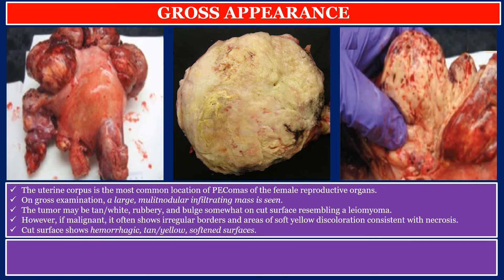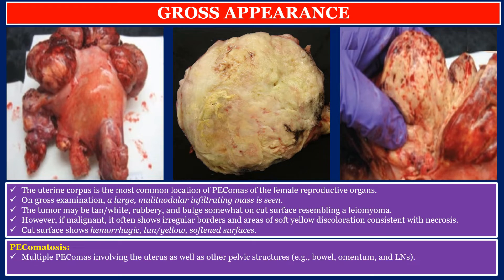Cut surface shows hemorrhagic, tan-yellow, and softened surfaces. What is PEComatosis? There are multiple PEComas involving the uterus as well as other pelvic structures such as bowel, omentum, and lymph nodes. These are more common in patients affected by tuberous sclerosis complex.